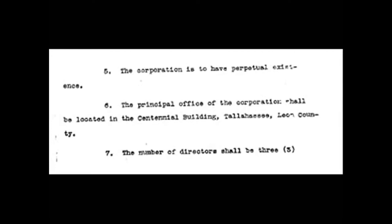The principal office of the corporation shall be located in the Centennial Building, Tallahassee, Leon County. The number of directors shall be 3. The names of the directors who shall hold office for the first year, or until their successors are elected and qualified, are as follows: Harry O'Coghlan, 150 Broadway, New York, New York; Samuel B. Howard, 150 Broadway, New York, New York; Arthur W. Britton, 150 Broadway, New York, New York.